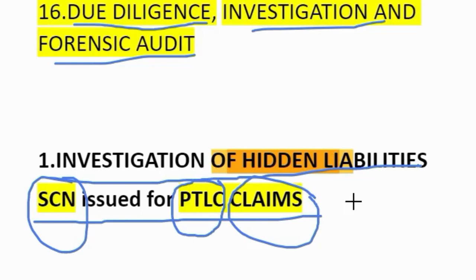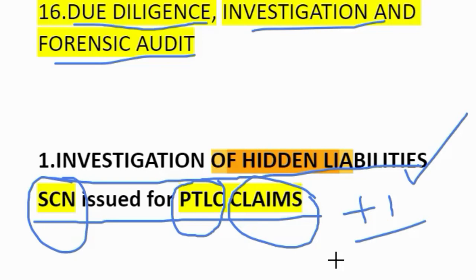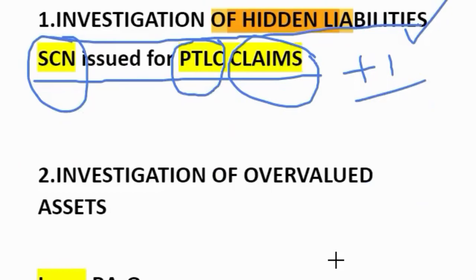This is investigation of hidden liabilities. There are many points — if you remember these six points it will be enough. If you want to add another point, there is also labor claims under negotiation. So you can write two claims: claims ignored by the company including third party claims, and labor claims under negotiation. That comes to seven points. Now come to the next question.